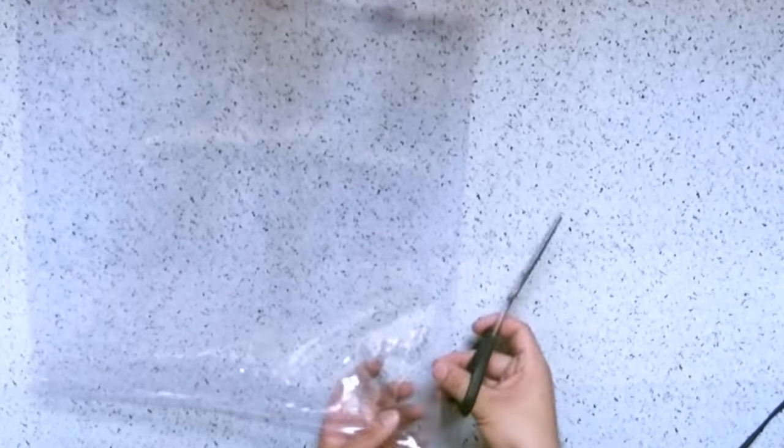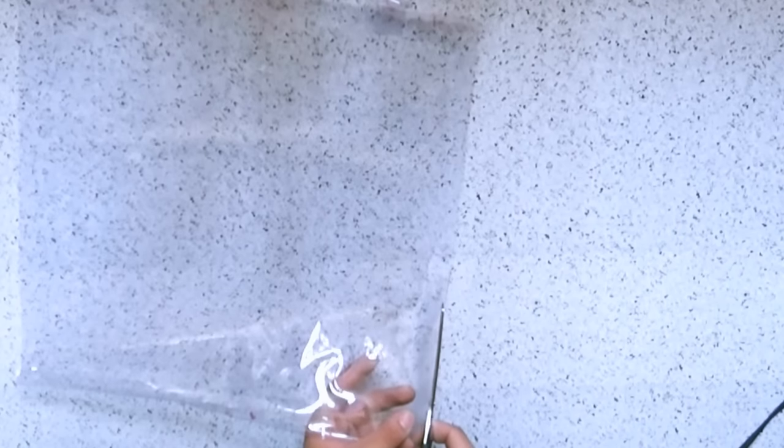Once all the edges are fused, if you have any excess plastic hanging from the edge, you may trim it with scissors. And that's pretty much it. You just need to turn the bag inside out, but I totally forgot to record that. However, I got to warn you guys...